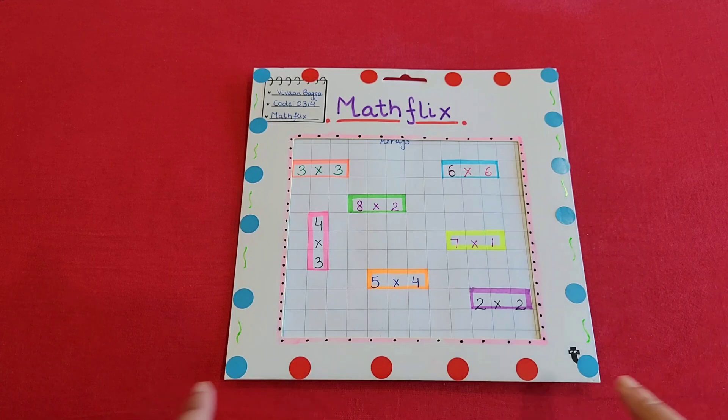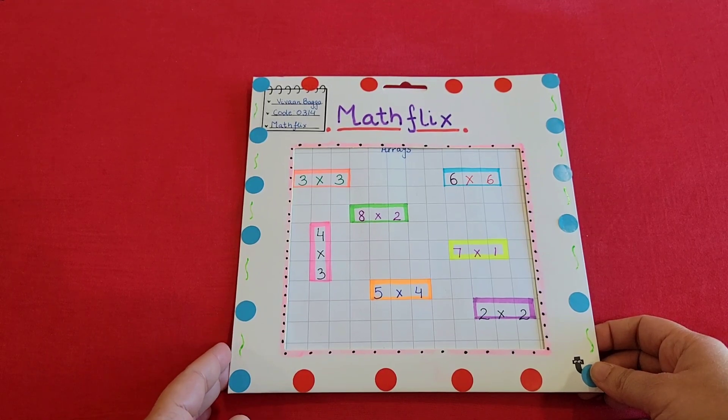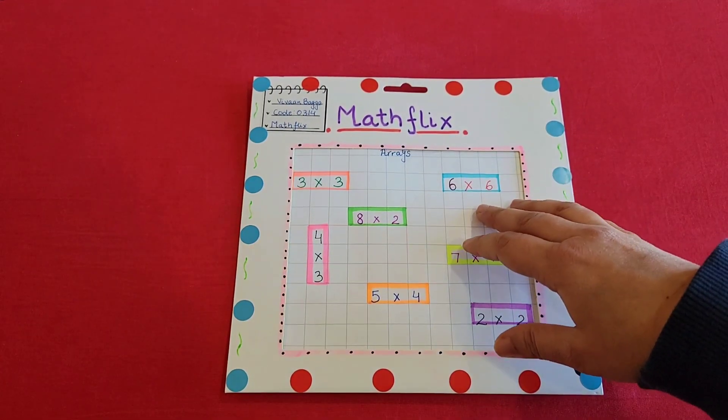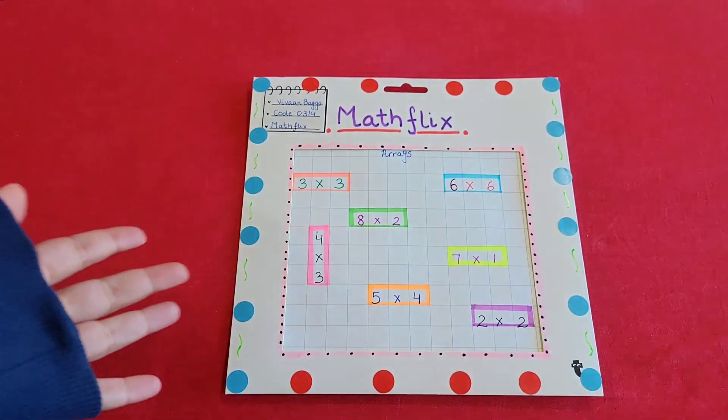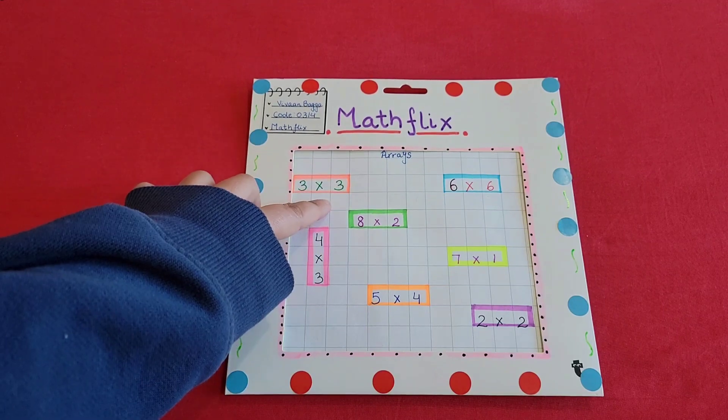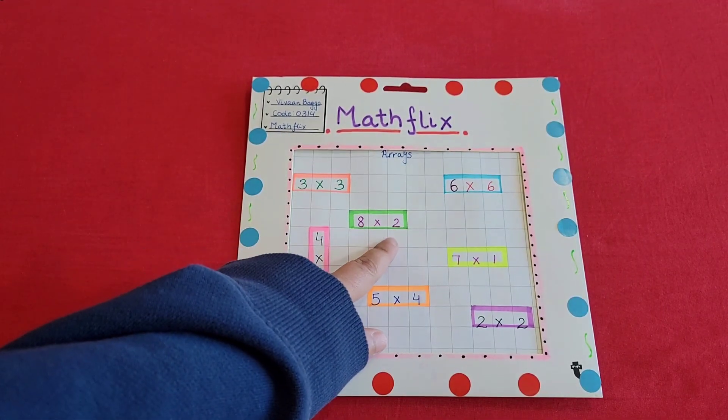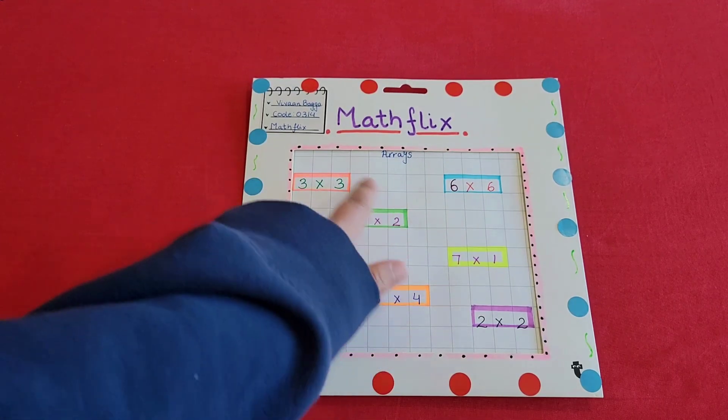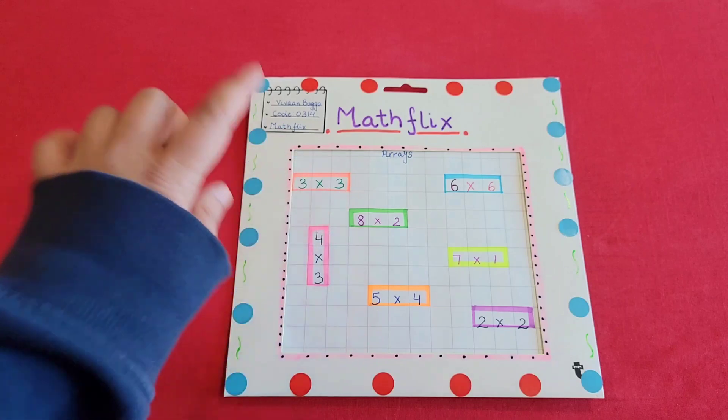So the first one here you see is I have these different equations right here, and because it's an activity based on arrays, so you have 3 by 3, once the answer is 9, the child has to color 9 blocks from here. So same goes for all the other ones. So the child has to look what the answer is and is going to figure out in a way that each one of them have their own arrays and each one of them should be of different color.